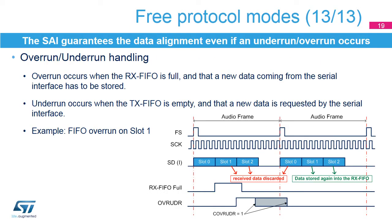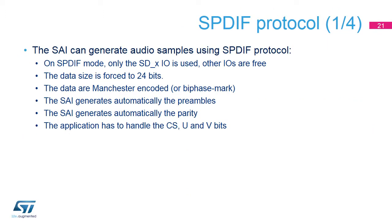The SAI guarantees the data alignment even if an underrun or an overrun occurs. The SAI supports the Audio IEC 60958 standard in transmit mode when configured for the SPDIF protocol. The SAI generates the preambles and the parity bit according to the transmitted data. The software has to handle the CS, U, and V bits.